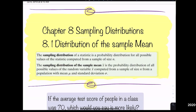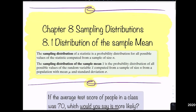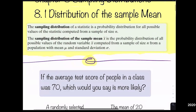Chapter 8: Sampling Distributions. Section 8.1 covers the distribution of the sample mean. The sampling distribution of a statistic is a probability distribution for all possible values of the statistic computed from a sample of size n.